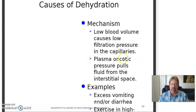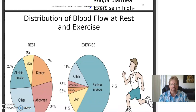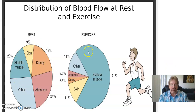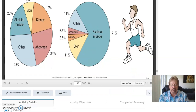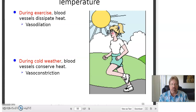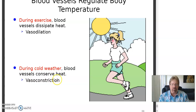Causes of dehydration: low blood volume caused by low filtration pressure in the capillaries — plasma oncotic pressure pulls fluid from the interstitial spaces. Examples: excess vomiting or diarrhea, which can be quite serious. Distribution of blood fluid at rest vs. exercise: during rest it's spaced out, but during exercise skeletal muscle hogs up 71% of the blood flow — just as you'd think, because the muscle demands oxygen. Blood vessels also regulate body temperature: during exercise, blood vessels dissipate heat by vasodilation; during cold weather, they conserve heat by vasoconstriction.